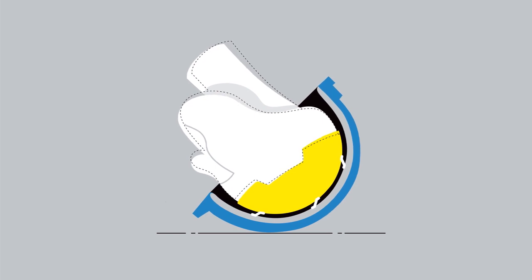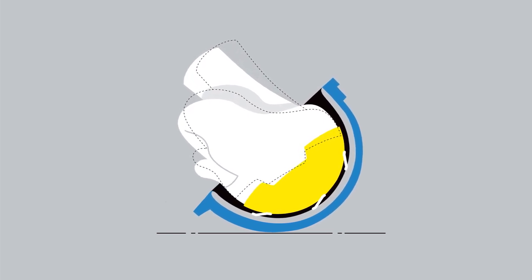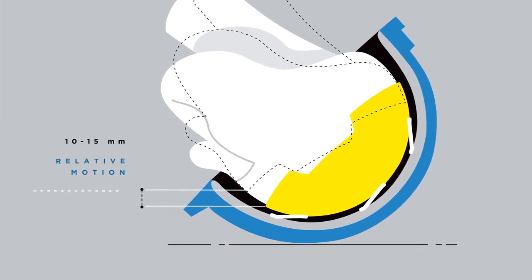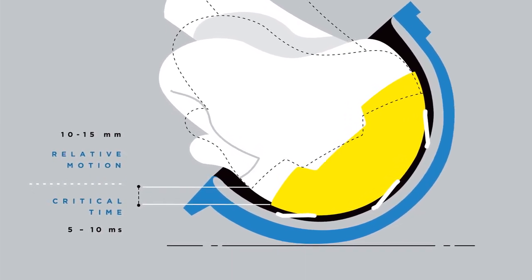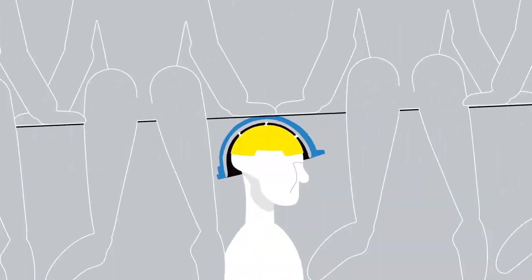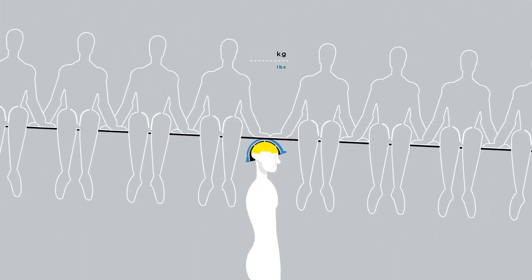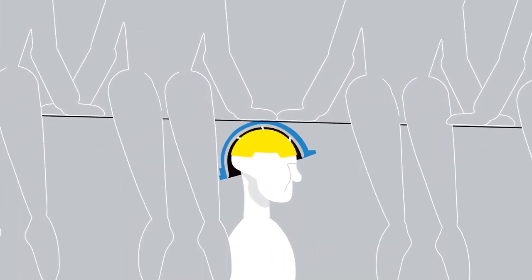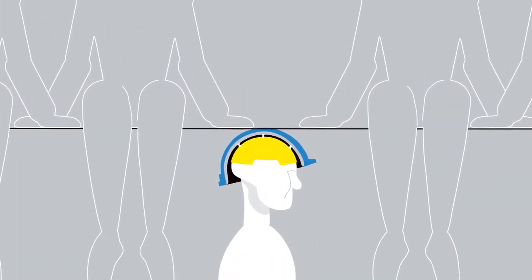The patent and design of the MIPS brain protection system allows 10 to 15 millimeters of relative motion between your head and helmet during the critical 5 to 10 milliseconds of an impact. Even when the combination of your body weight and velocity can create a contact force of more than 750 kilograms, helmets with MIPS systems can offer more protection in certain impacts.